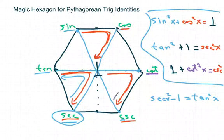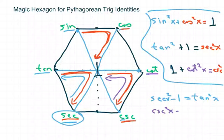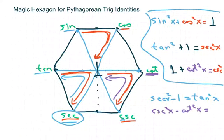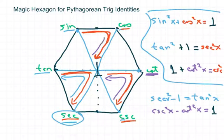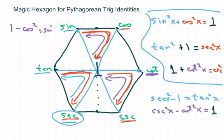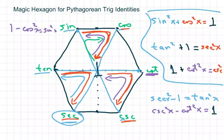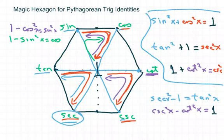I could say start here and go this way: cosecant squared minus cotan squared of x equals 1. And you can also do the sine: 1 minus cosine squared equals sine squared of x. Or you could go back the other way — 1 minus sine squared equals cosine squared.